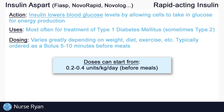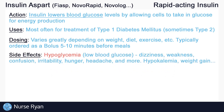Insulin aspart is also available as a pre-mixed insulin with intermediate acting insulins. Keep in mind that renal and hepatic impairment, more often in elderly patients, may affect insulin dosing, requiring lower doses. Hypoglycemia, or abnormally low blood glucose levels, is the most common side effect of insulin. Hypoglycemia may present as dizziness, weakness, confusion, irritability, hunger, headaches, and more. Other side effects of insulin include hypokalemia, or low potassium levels in the blood, weight gain, and more.